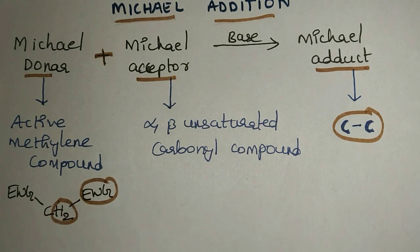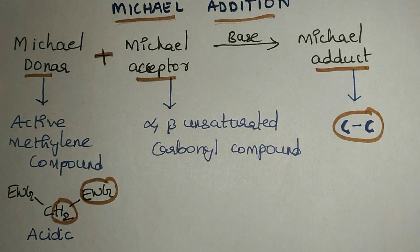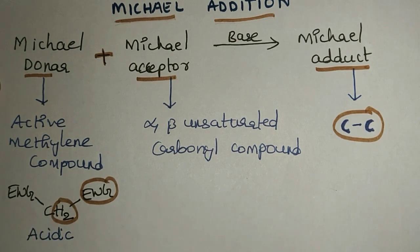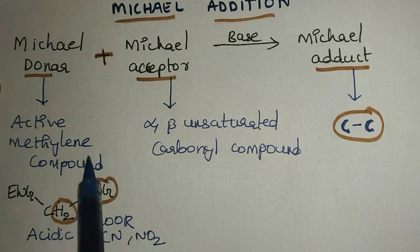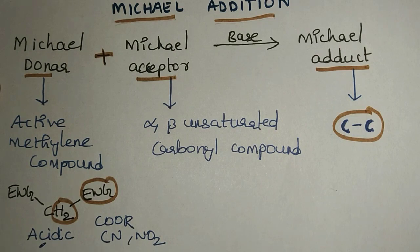Active methylene compounds are those which have acidic hydrogens — hydrogens that can easily be donated. Examples of electron-withdrawing groups include carboxylic acid, carboxylic ester, cyanide group, and nitro group. The presence of these groups increases the acidity of the hydrogens, making the compound an active methylene compound.